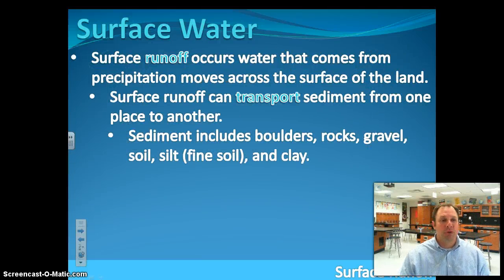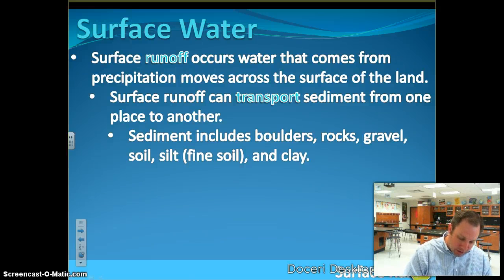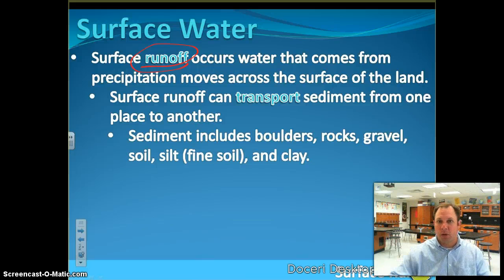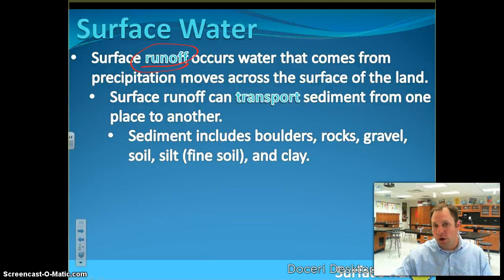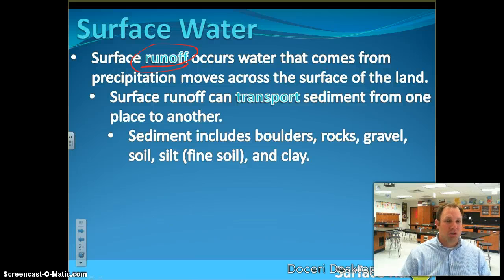Surface water occurs when we have rain. Rain comes down, and then you have runoff. Runoff is the rainwater that hits the ground, is not absorbed into the ground, and runs off. It's water that goes down the sidewalk, down the street, down to the sewer. A lot of that water runs off. If it's not running down on concrete areas, it's running in the ground — into creeks. Those creeks go into bigger creeks, those creeks go into rivers, and so forth.